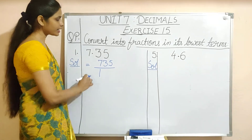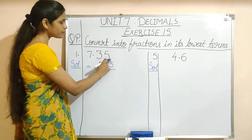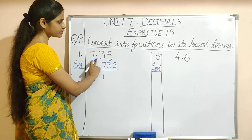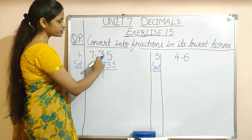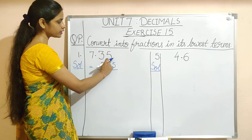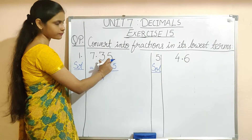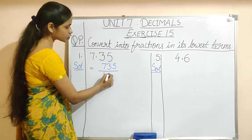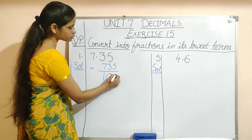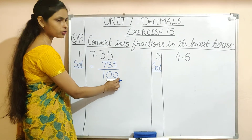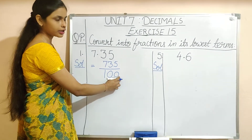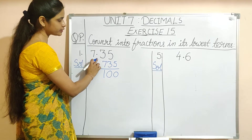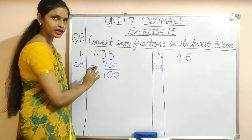After that, count the number of digits after the decimal. So after the decimal, we have two digits — one is 3 and the other one is 5. Two digits are there, so place two zeros to the right side of 1.